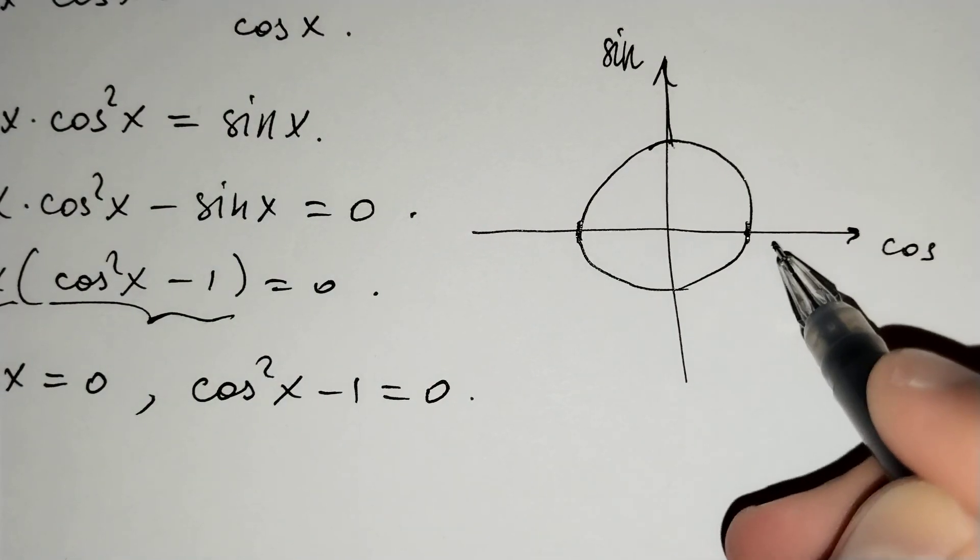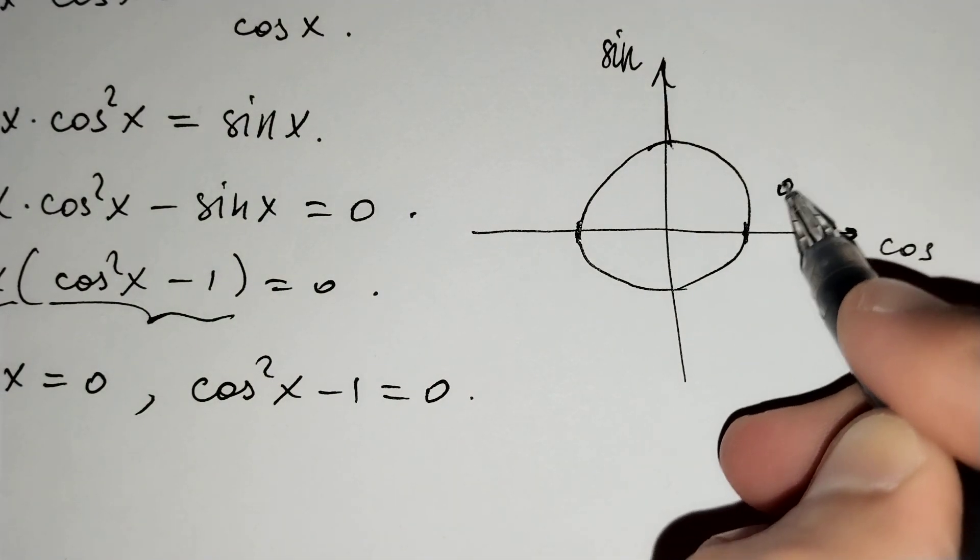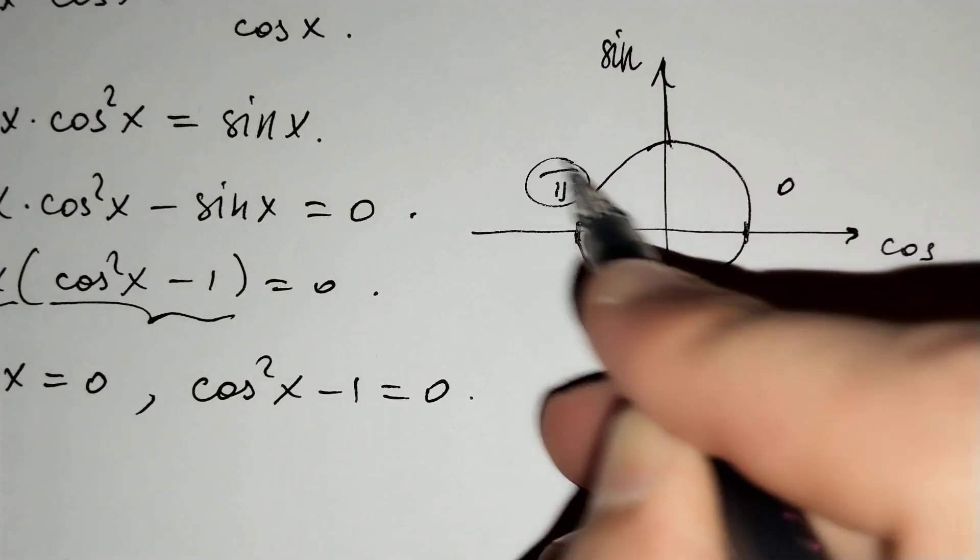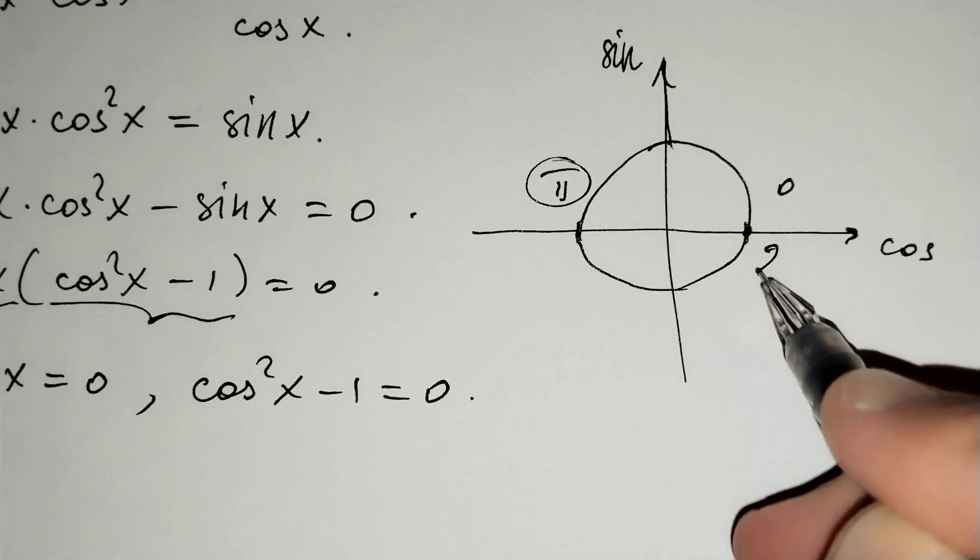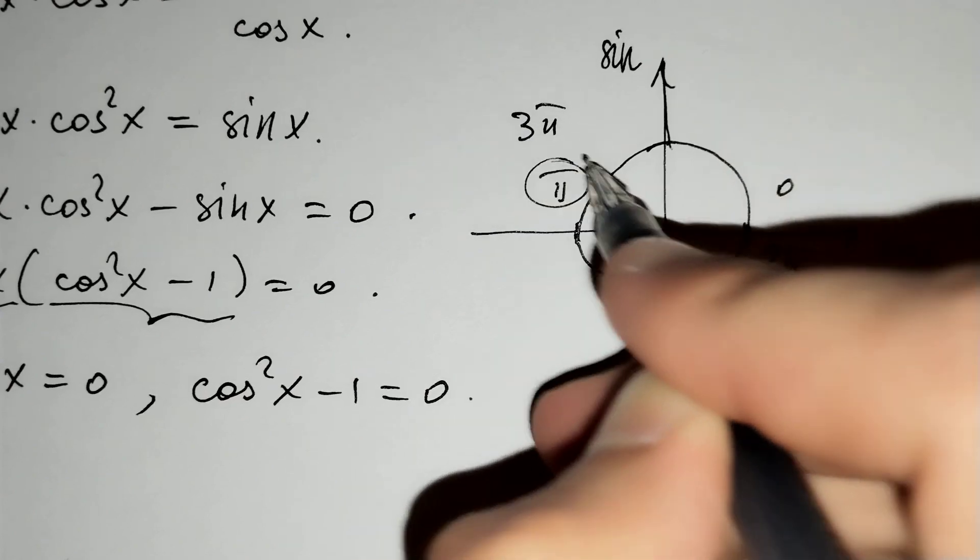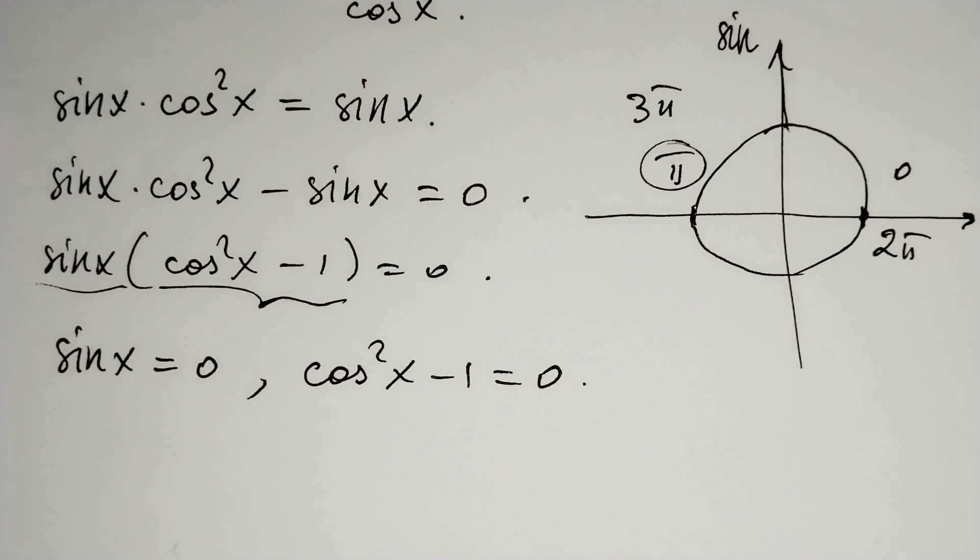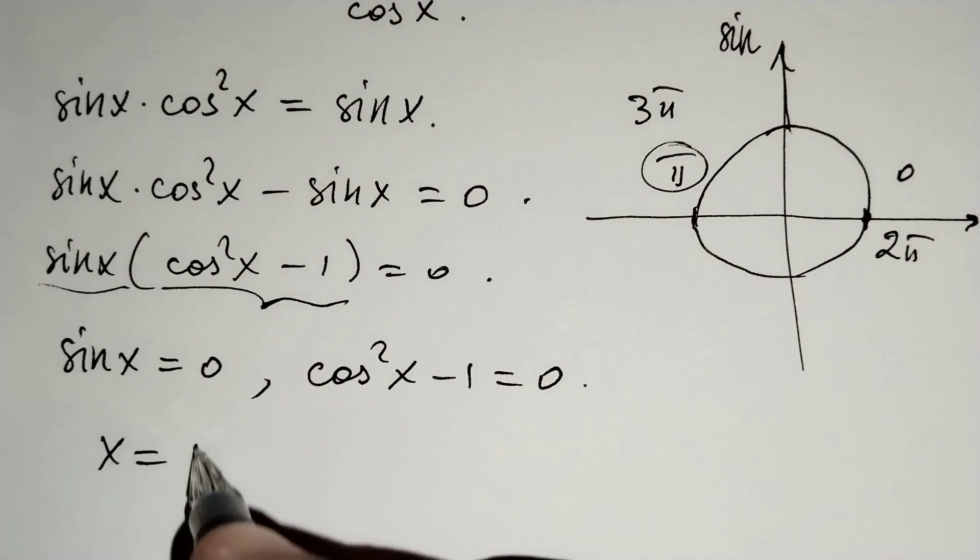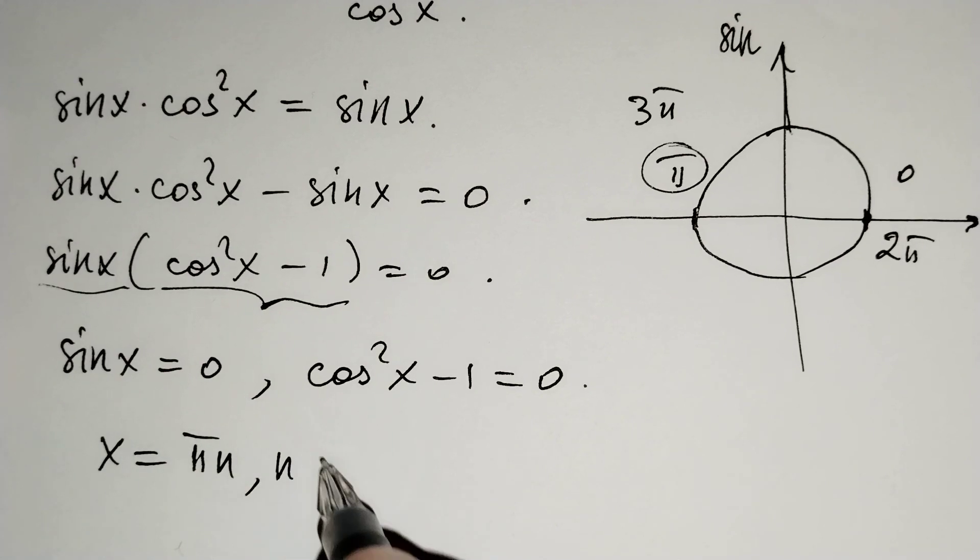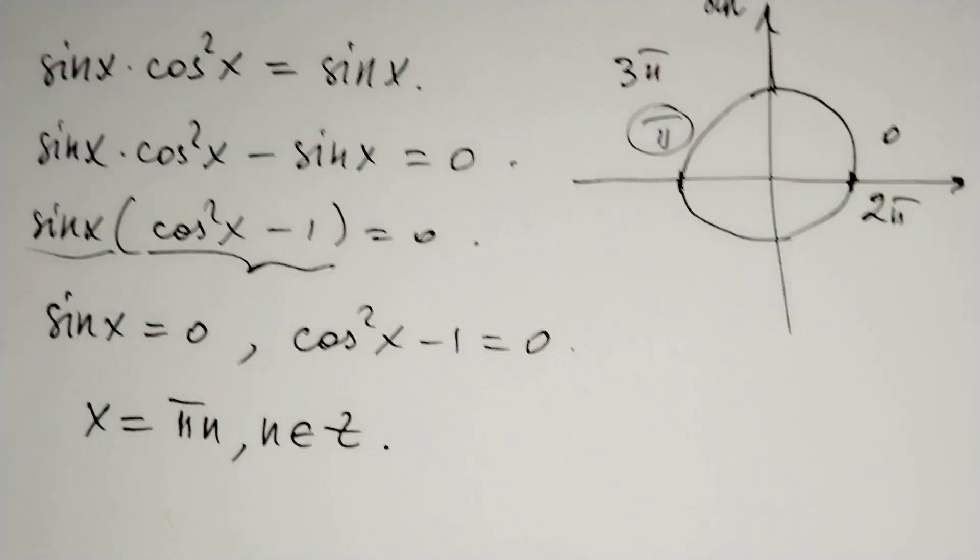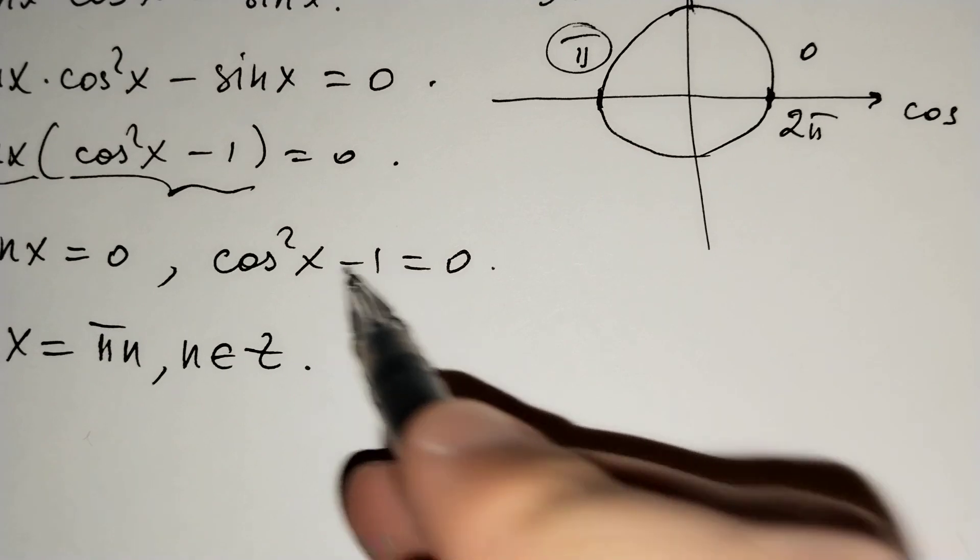These dots are 0, pi, 2 pi, 3 pi, and so on. Then, x equals pi n, where n belongs to the integers. Now for the second case: cosine squared x minus 1 equals 0.